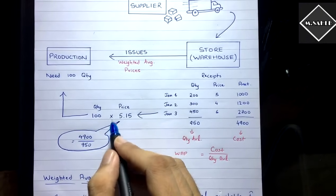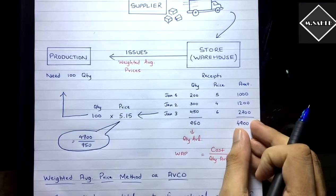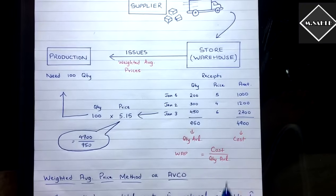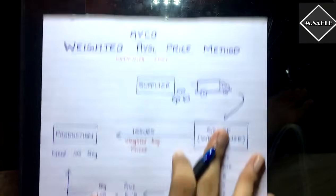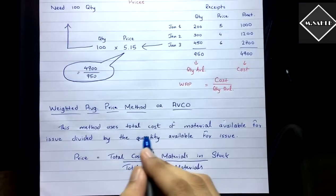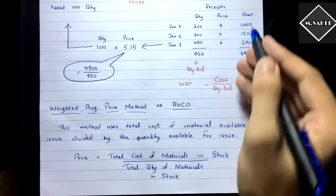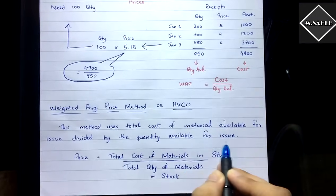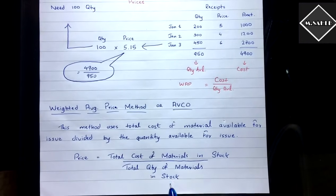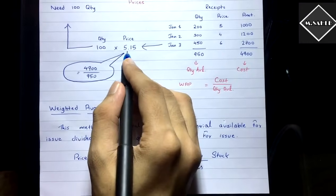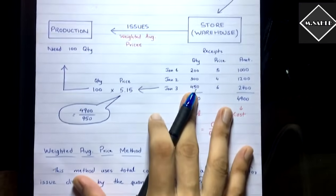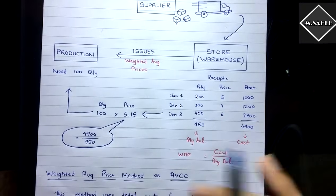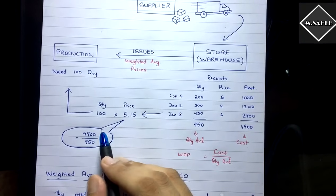This is how you price your issue of materials — take the total cost of whatever is available and divide by the quantity available to get the average cost per unit. That is why it is also called the Average Cost method. The formula is: Price = Total Cost of Materials ÷ Total Quantity available.